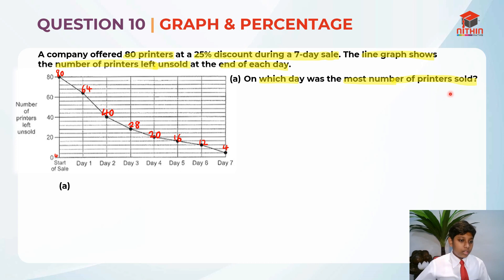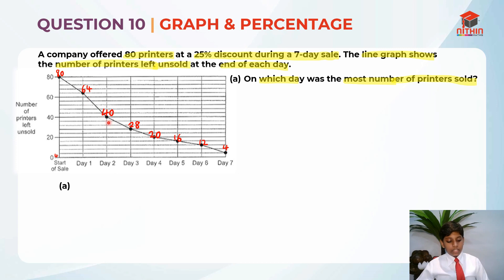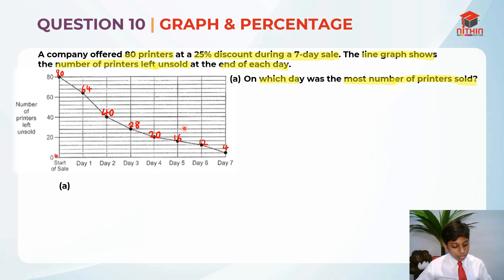On which day was the most number of printers sold? To find the answer, you just need to find the steepest line. The steepest line is from day 1 to day 2, so day 2 is when the most printers were sold. When the line is steeper, it means more printers were sold at a faster rate. When lines are not as steep, fewer printers were sold.